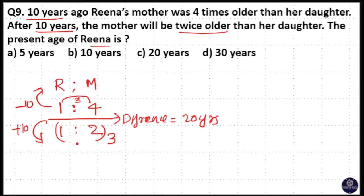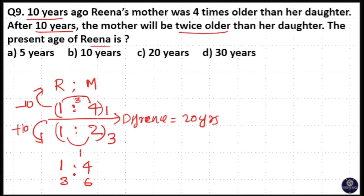Then take the difference between 1 and 2, that is 1, then multiply it with 1 and 4. Your new ratio will be 1 is to 4 and 3 is to 6. This is your new ratio.